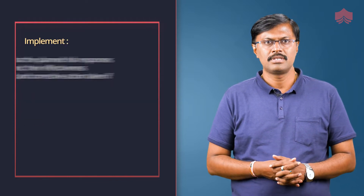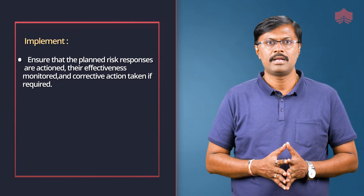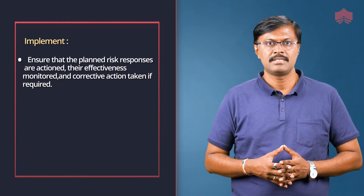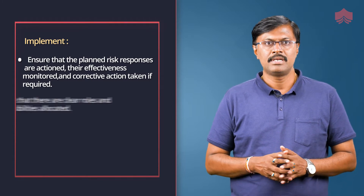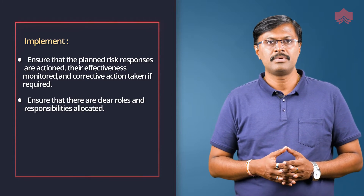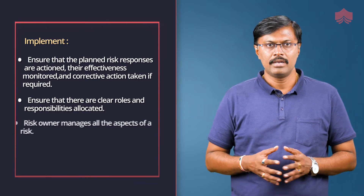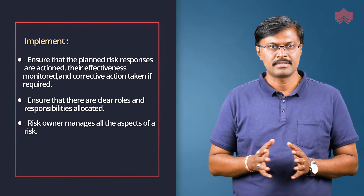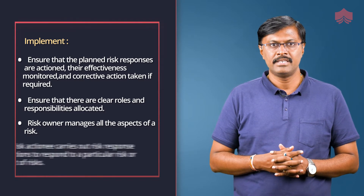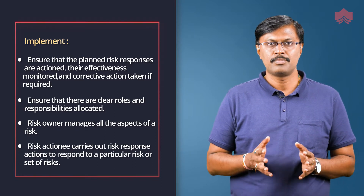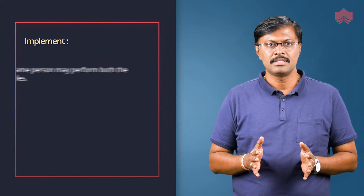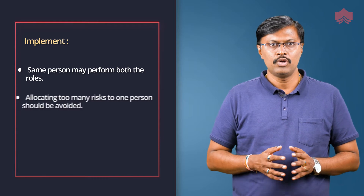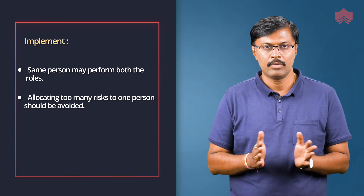The implement step ensures that the planned risk responses are actioned, their effectiveness is monitored and corrective action taken if required. It is important to ensure that there are clear roles and responsibilities allocated. The risk owner manages all aspects of a risk, while the risk actioner carries out the risk response actions to respond to a particular risk or set of risks. The same person may perform both roles, but allocating too many risks to one person should be avoided.